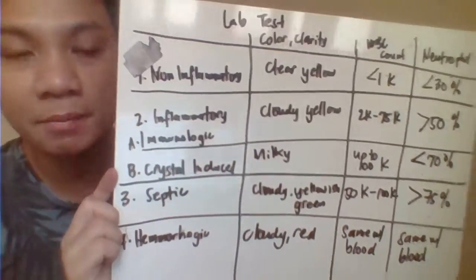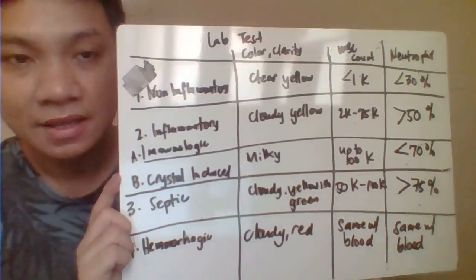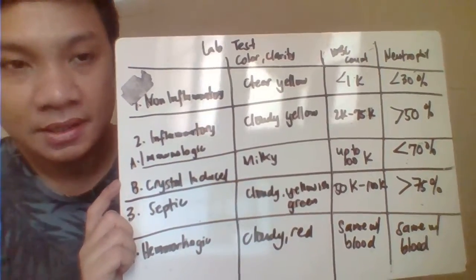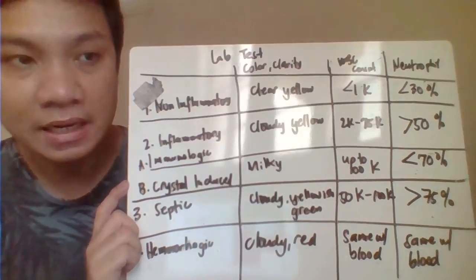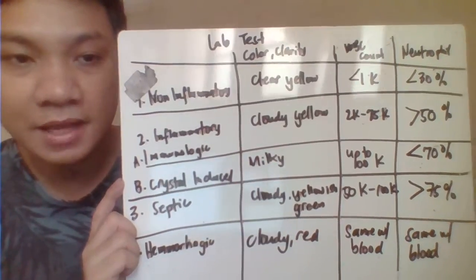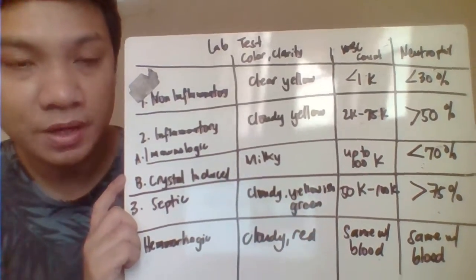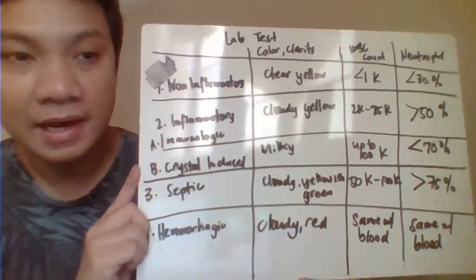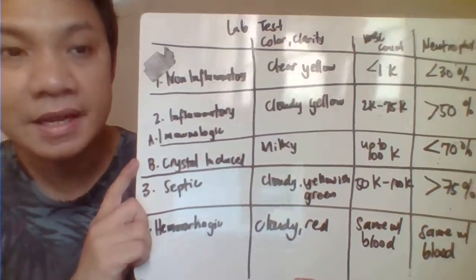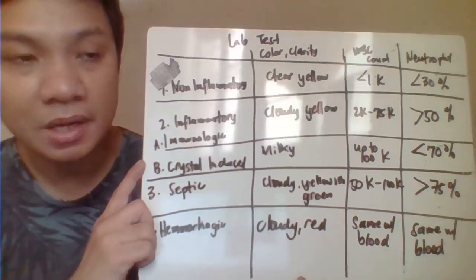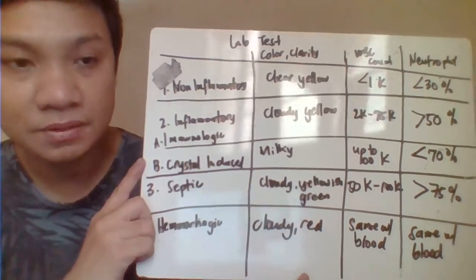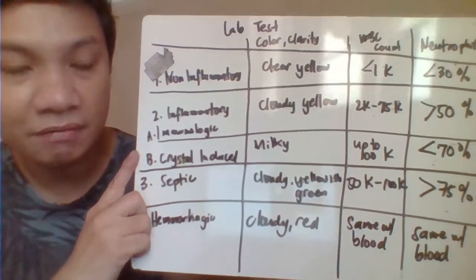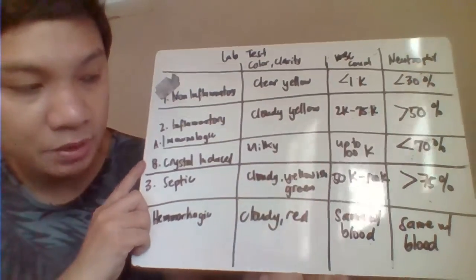We have laboratory tests that help us differentiate the different types of arthritis. For color and clarity: non-inflammatory is clear yellow; immunologic disorder is cloudy yellow; crystal-induced is milky; septic is cloudy with a greenish tinge; and hemorrhagic is cloudy red. For WBC count: non-inflammatory is less than 1,000; immunologic disorders are 2,000 to 75,000; crystal-induced can go as high as 100,000; septic is 50,000 to 100,000; and hemorrhagic is the same as blood.